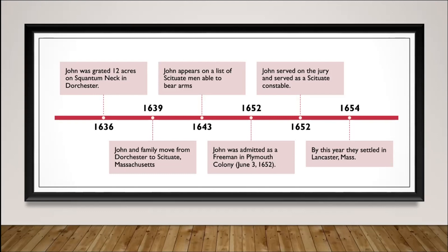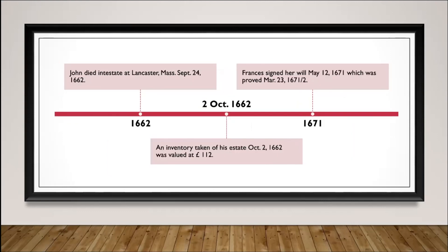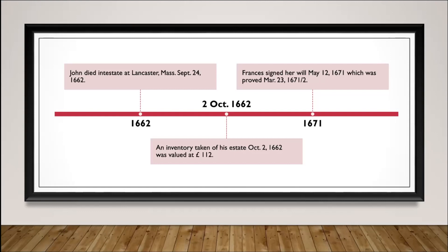By 1654, they had settled in Lancaster, Massachusetts — so they hopscotched all around Massachusetts, going from Dorchester to Plymouth Colony, then out to Lancaster. John died intestate on the 24th of September, 1662 in Lancaster, Massachusetts. Having not left a will, we don't get a lot of the breakdown of his estate, but you still get to see the inventory — a pretty substantial amount, not bad for a farmer at that point. On October 2nd, 1662, an inventory was taken just a little over a week later, and his entire estate was worth 112 pounds. We know that John was literate — not because he wrote a will, but he actually signed a deed where his name is transposed on. His wife Francis, who died nine years later, wrote her own will on May 12th, 1671, and it was proved March 23rd, 1671-72.